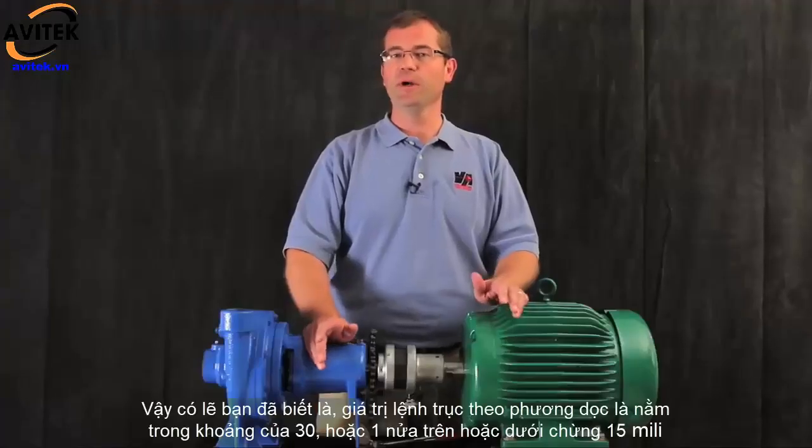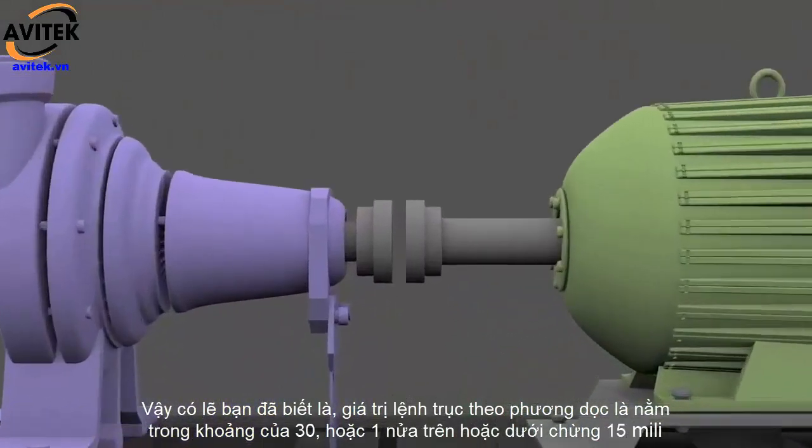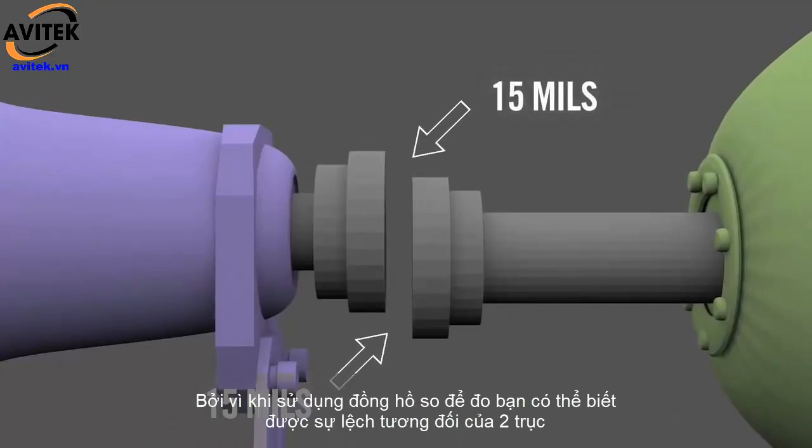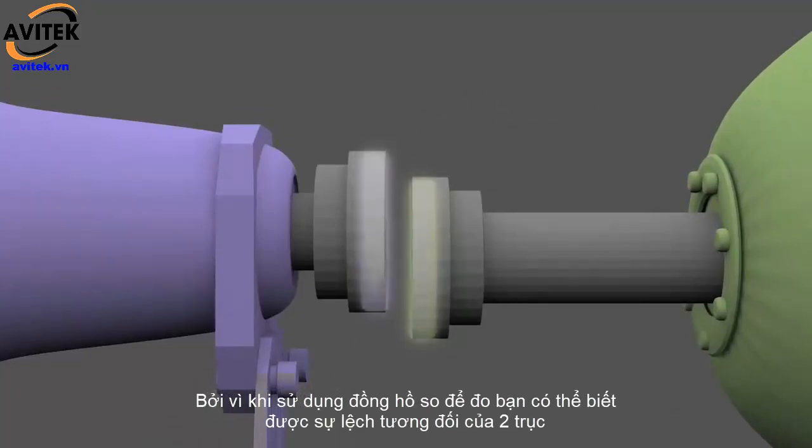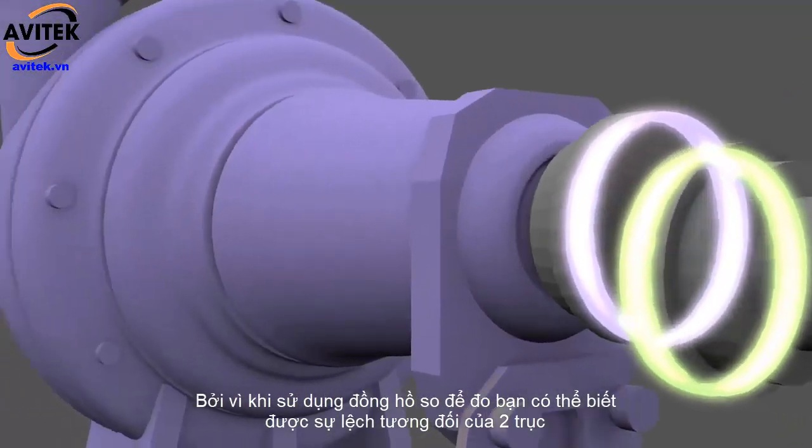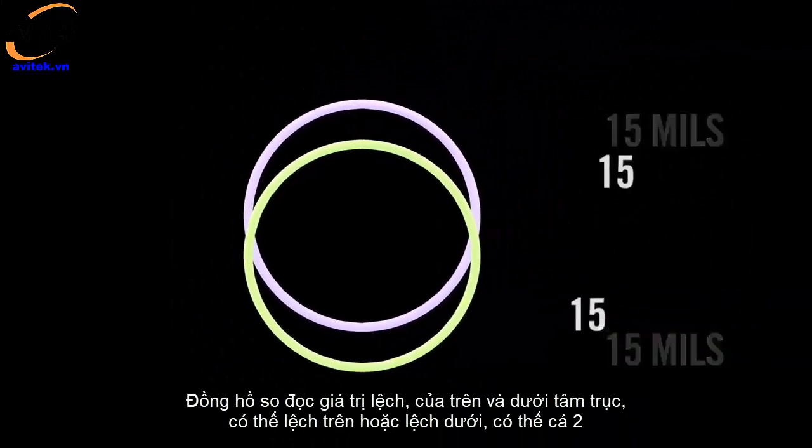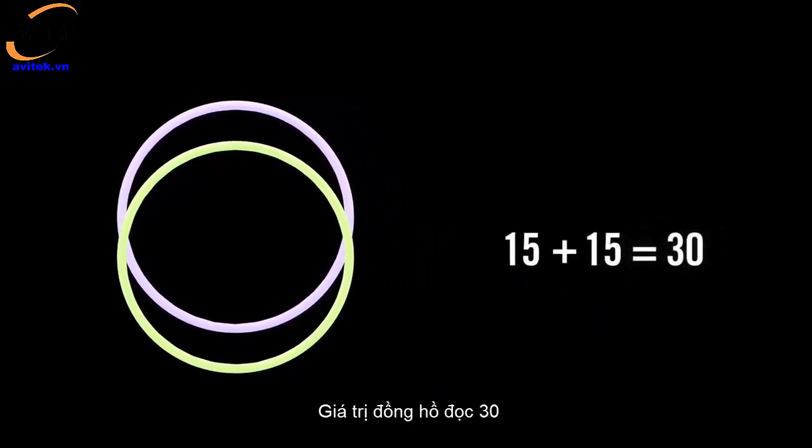Now, as you're probably aware, the actual vertical offset of the shafts is half the TIR, or 15 mils. This is because when using a dial indicator to measure the relative positions of two shafts, the dial reads the misalignment on both sides of the center line, so the value comes up as twice the actual offset.